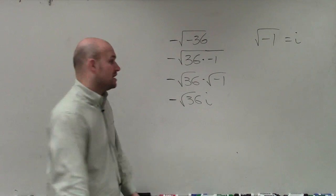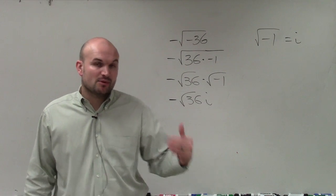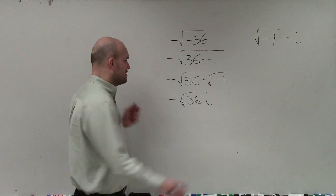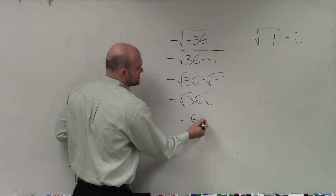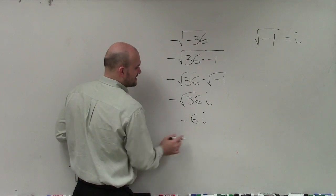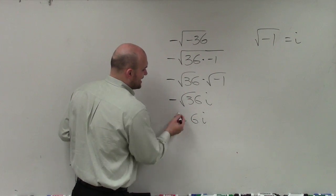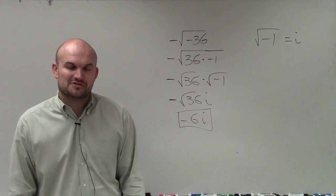So what I notice is the square root of 36 is a square number, meaning what number multiplied by itself gives us 36. Well, this is a square number because we have an integer, 6, multiplied by itself gives us 36. Therefore, the square root of 36 equals 6, multiplied by negative 1 and i, gives us our final simplified expression of negative 6i. Thanks.